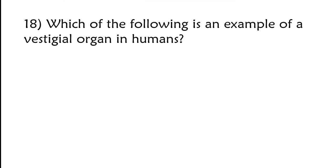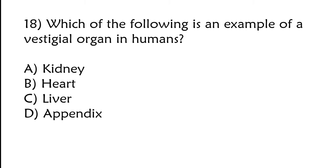Which of the following is an example of a vestigial organ in humans? Kidney, heart, liver, or appendix. The correct answer is option D, appendix.